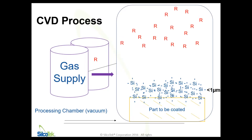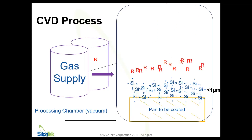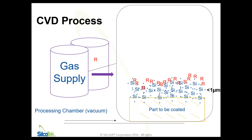Most of our coatings then will have a secondary process step that's also performed within a CVD chamber at the same time. That will introduce an inert layer or a corrosion-resistant layer that makes up the differences between the various coatings we offer. Depending on your application, we have different surface functionalizations — represented as R in the diagram — and those give the different performance properties, whether it's chemical inertness, anti-coking properties, non-stick, etc.